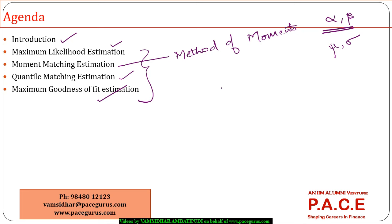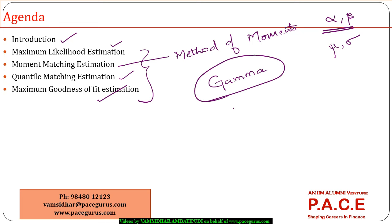So we will take one single example. We will try to fit one particular distribution — let us say I want to fit a gamma distribution to a particular data. And I want to see, using each of these four different approaches, which one is giving me what kind of estimates for the various parameters that I am trying to estimate.